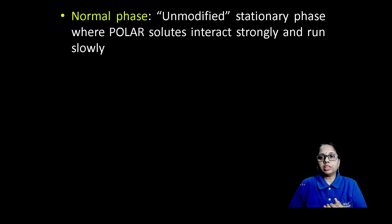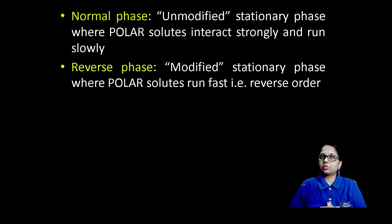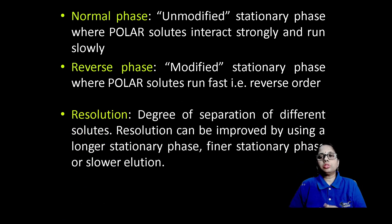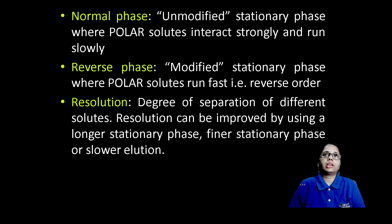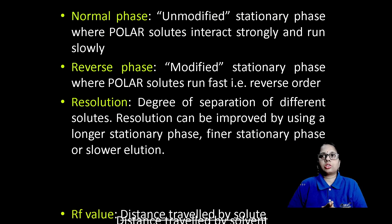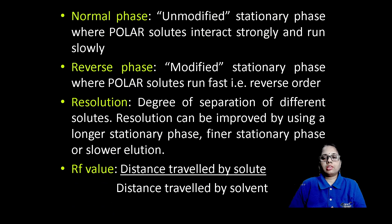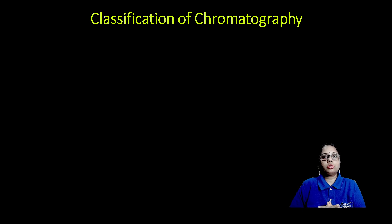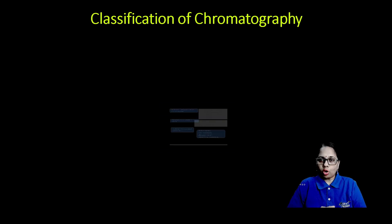Elution time is the time taken for the compounds to separate on the columns. Normal phase means an unmodified stationary phase where polar solutes interact strongly and run slowly. Reverse phase means polar solutes run fast, that is in the reverse order. Resolution means the degree of separation of the different solutes. It can be increased by using a longer stationary phase, thereby increasing the RF value, which is the retention factor — the distance traveled by the solute divided by the distance traveled by the solvent.